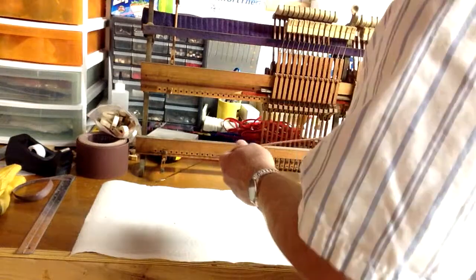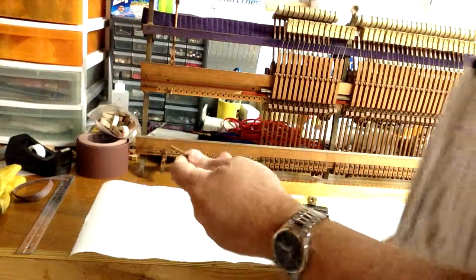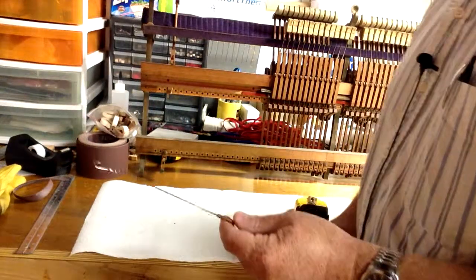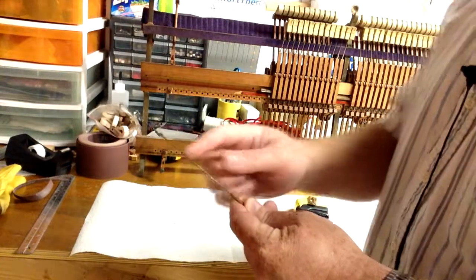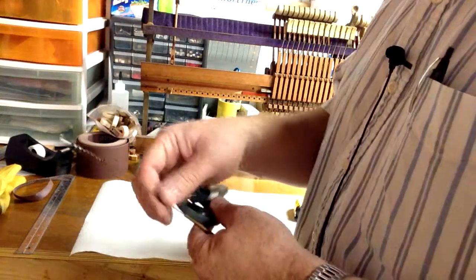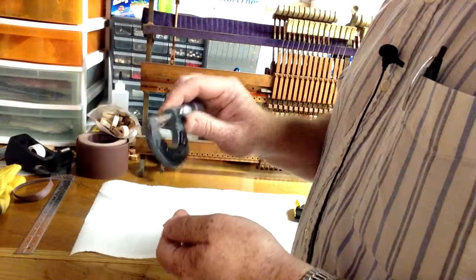The other two measurements that we're going to need in order to make a custom base string for you is the diameter of the core wire. To measure the core wire, you would use a micrometer.